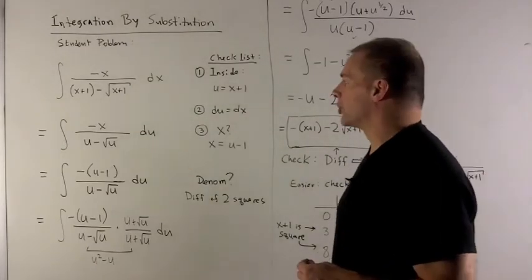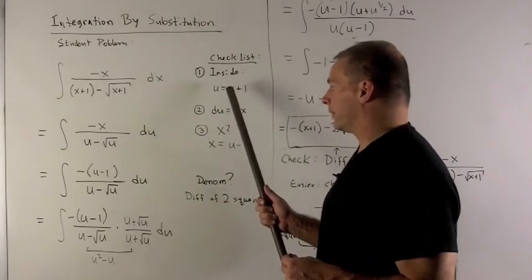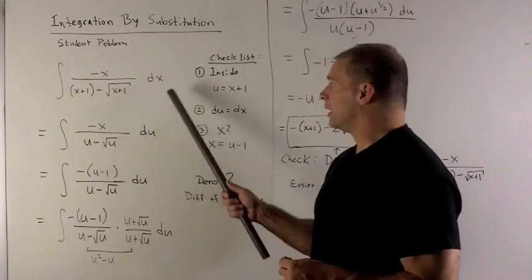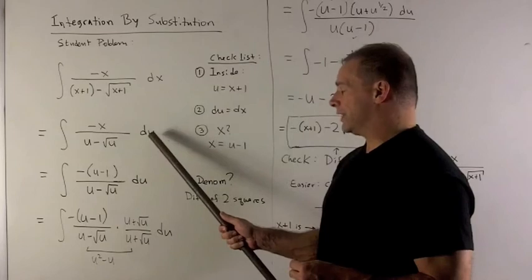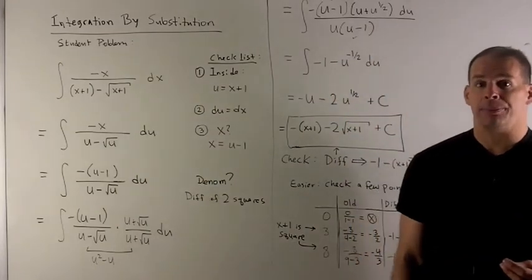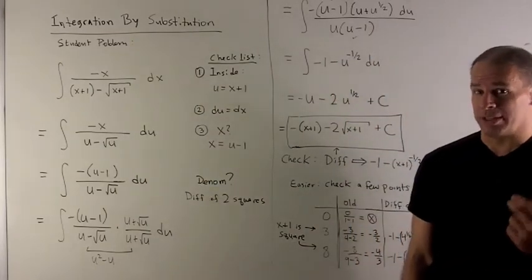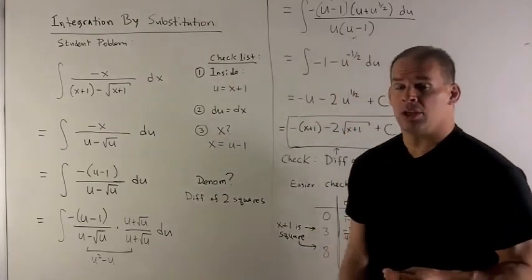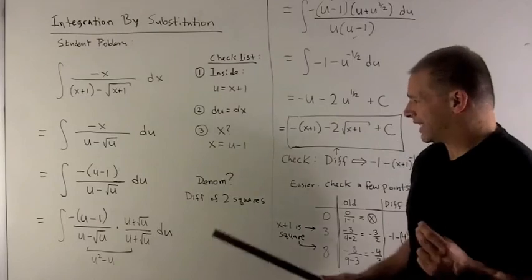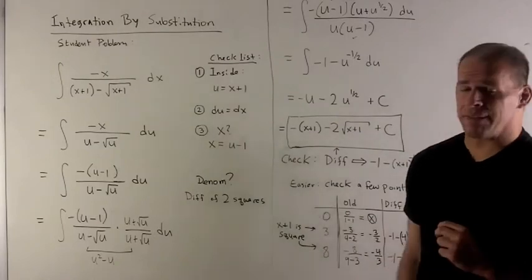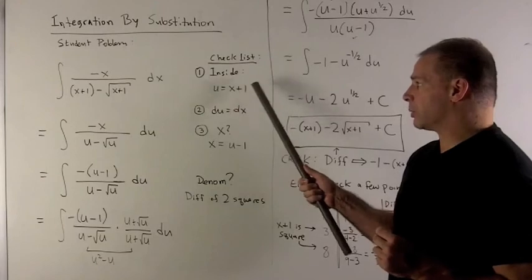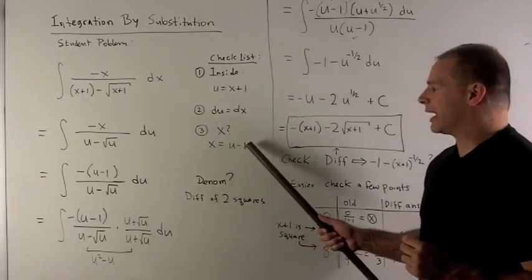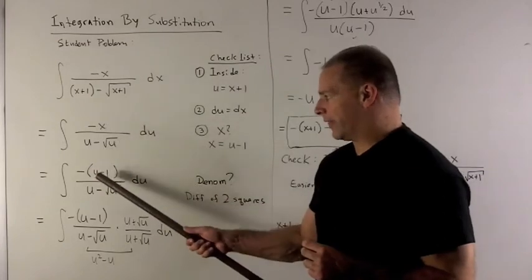Then we follow our steps. I substitute u in for x plus 1 — we have two spots for that — and I put in du for dx. But in this case, we don't get the cancellation; we're stuck with an x. So I need to solve for x in terms of u. Well, u equals x plus 1, so if I move the 1 over, I get x equals u minus 1, and now I can put that in.